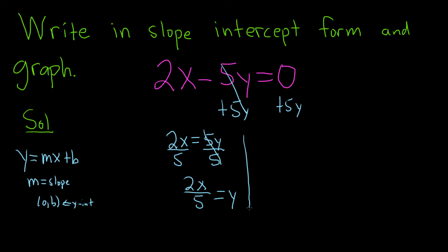Now you can write this backwards. You can write it as y equals 2x over 5. But this is the same thing as y equals two-fifths times x.